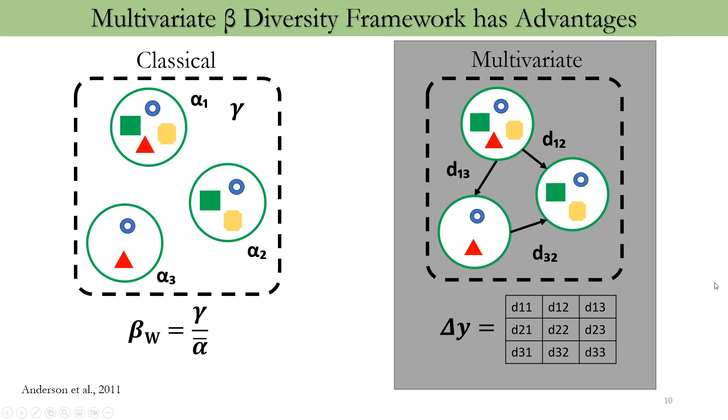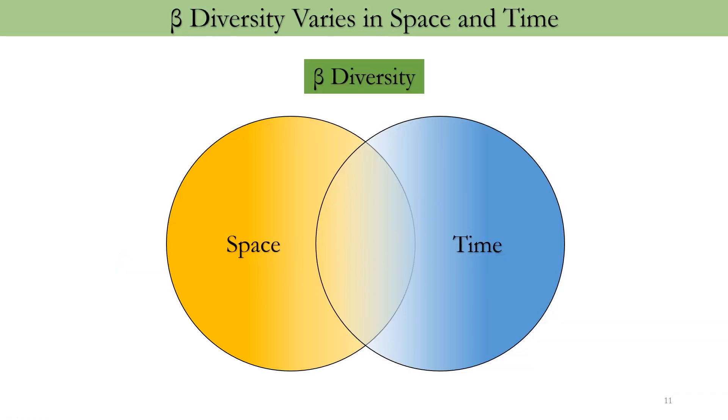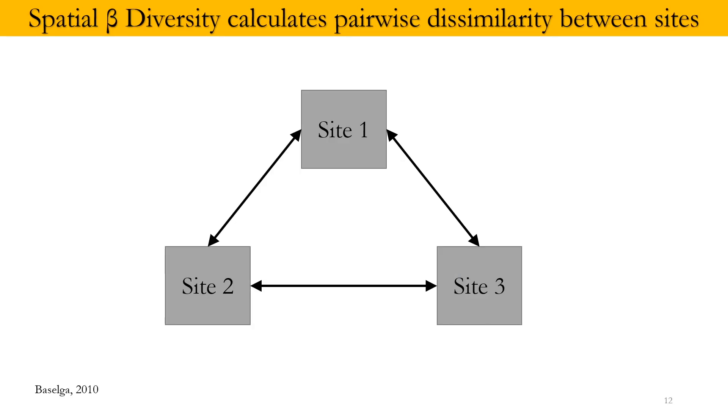Now, we have to understand the beta diversity is not static and it varies in both space and time. In space, sometimes separately. In time, sometimes separately. But in real life situations, it varies in space and time both. In space, beta diversity is calculated as pairwise dissimilarity between sites as we had looked in the previous example.